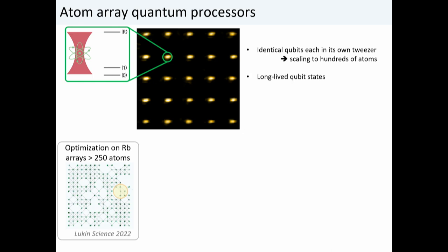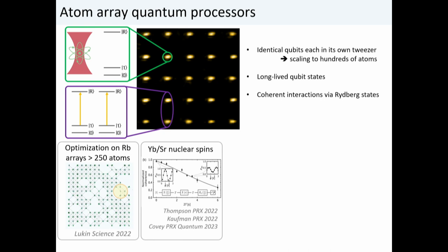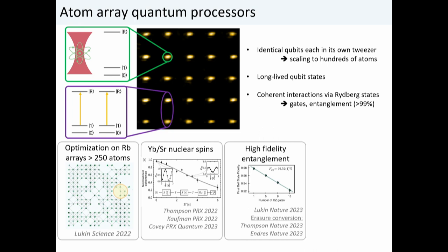These atomic qubits have really long-lived qubit states for computation. Recent work with ytterbium and strontium nuclear spins demonstrated coherence times much greater than about one second. When we want to make the atoms interact, we temporarily promote them to high-lying Rydberg states and use the strong dipole-dipole interactions to generate entangling gates. These entangling operations now have fidelities much greater than 99%, which is quite exciting. Recent work has also allowed researchers to perform algorithms with individual addressing.